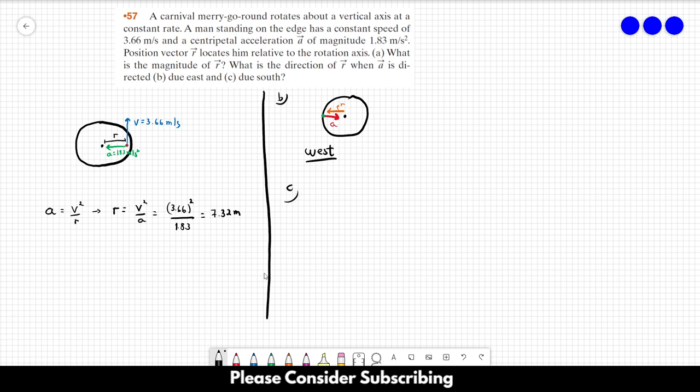As for letter C, now the acceleration points to the south. So it should be something like this. That's the acceleration. And of course, the position of the vector R points to the north, right? So that's the answer of letter C towards the north.